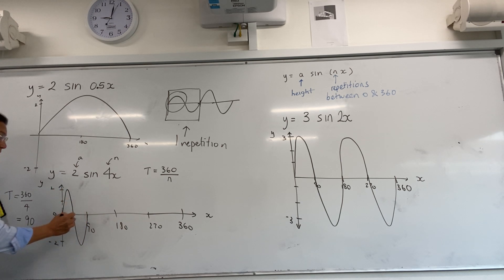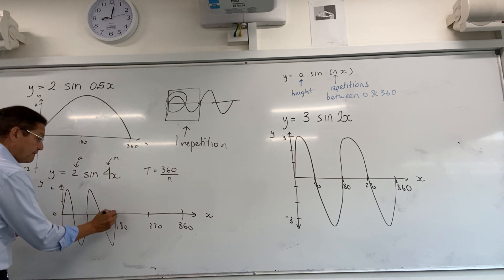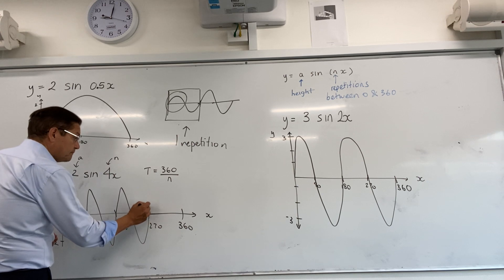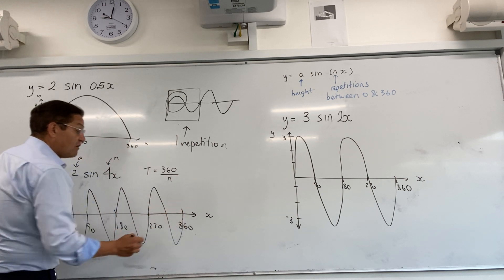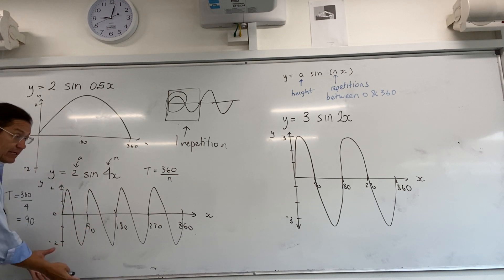And here I'm going to say, right, one repetition, one repetition, two repetitions, three repetitions, four repetitions. Each one of these, each one of these is one repetition, one cycle, and four of them have got to fit between 0 and 360. That's what that four tells me, and then two tells me how high it goes and how low it goes.